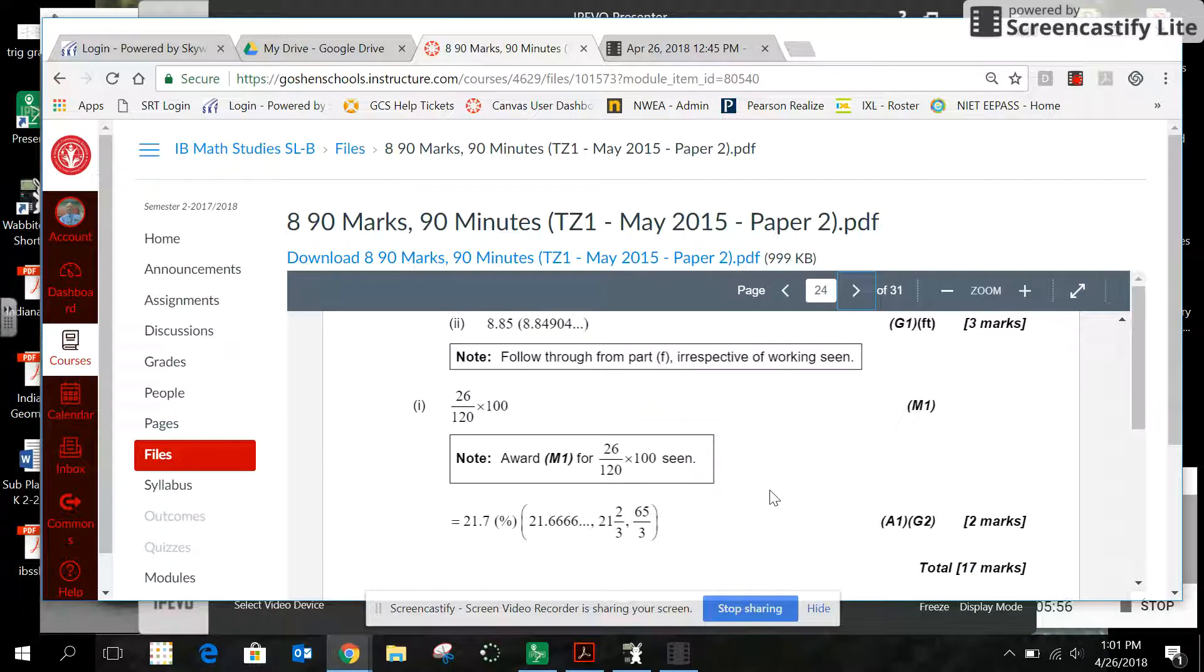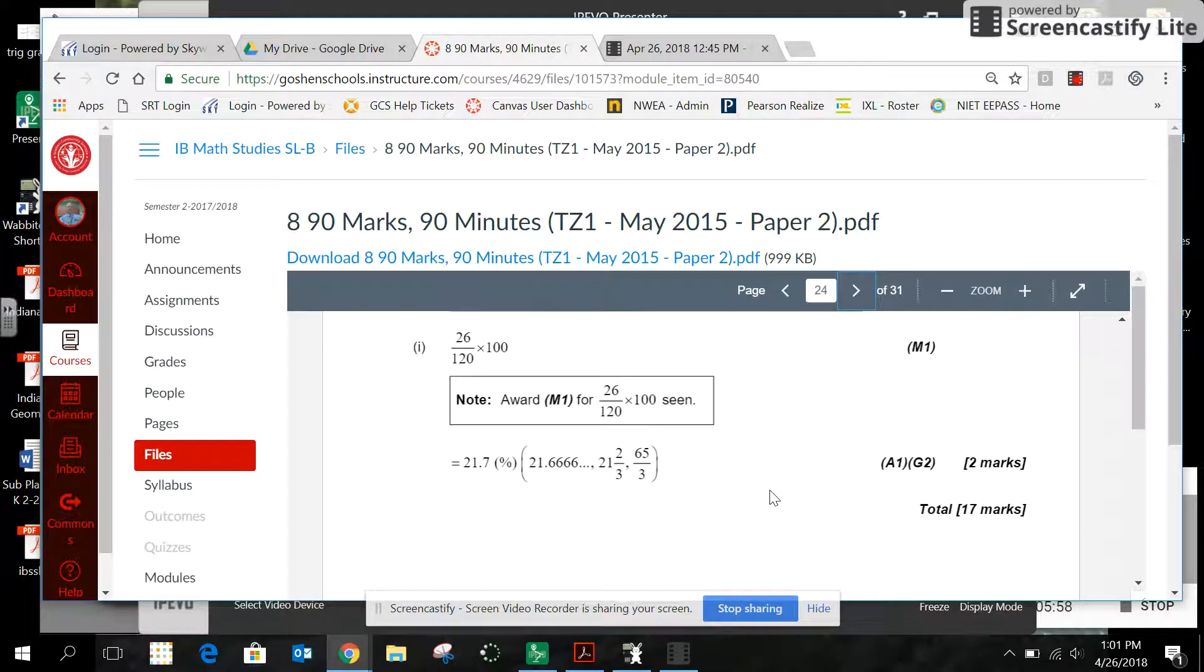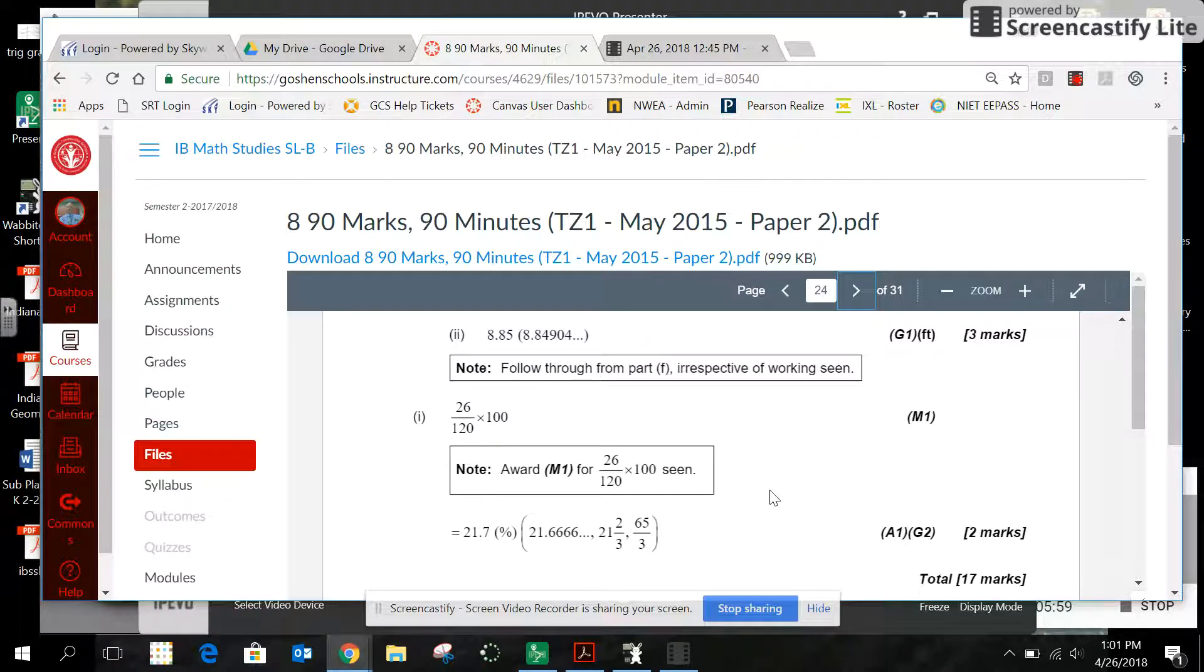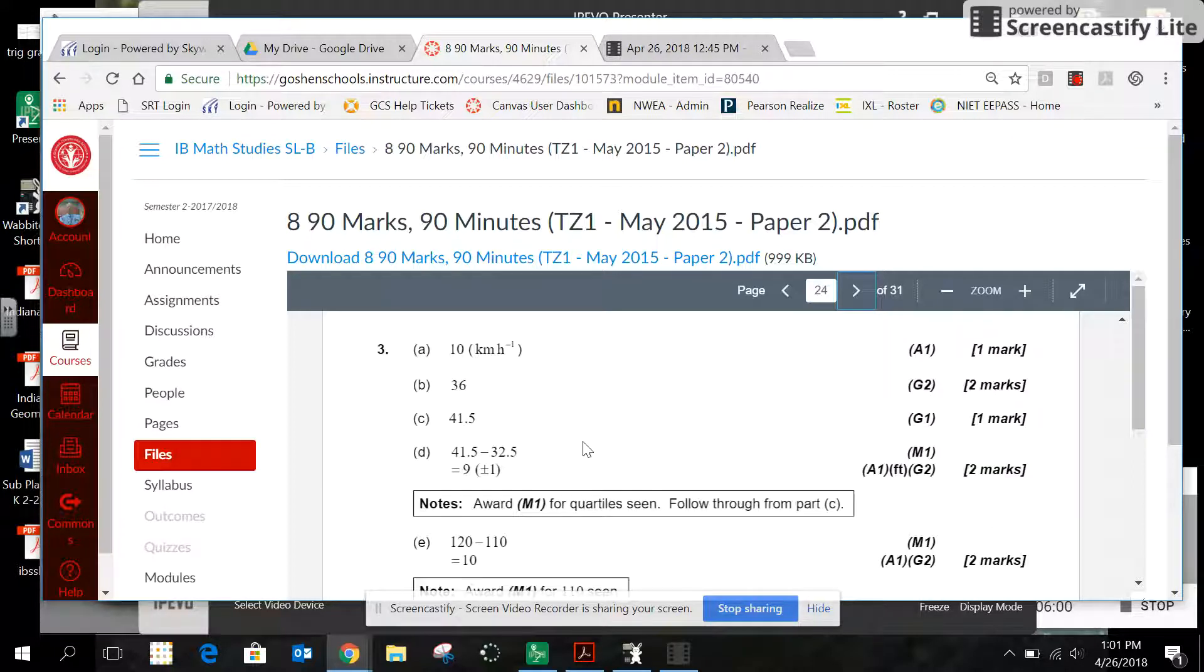My interquartile range was 8, I believe, when I did it. And so it says plus or minus 1. So anywhere from 8 to 10, they would accept. I had 42. There's 41.5. If I'm using a straight edge and a full-size graph, that'll come out. And then 4 and 10, we did just kind of using some arithmetic and subtracting. So I think this is one that you were good at, maybe forgot some things. The main thing I want to know is how do you estimate a mean when you don't know those values?